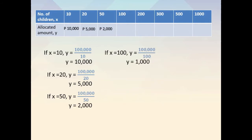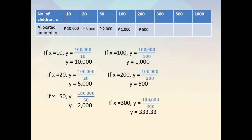If x is equal to 100, then y is equal to 100,000 over 100, so y is equal to 1,000 pesos. If x is equal to 200, then y is equal to 100,000 over 200, so y is equal to 500 pesos. If x is equal to 300, then y is equal to 100,000 over 300, so y is equal to 333.33 pesos. If x is equal to 500, then y is equal to 100,000 over 500, so y is equal to 200 pesos.